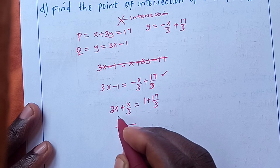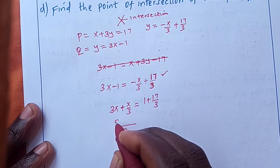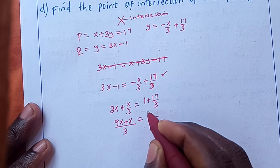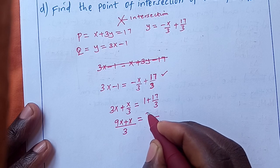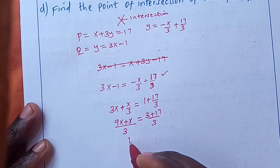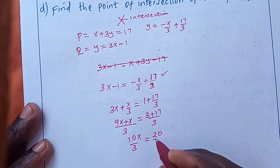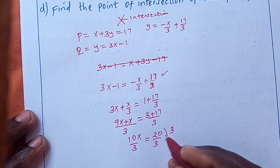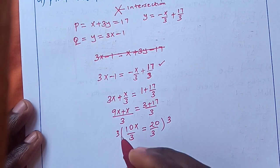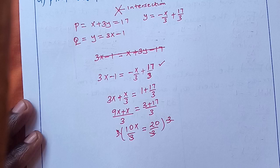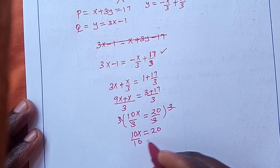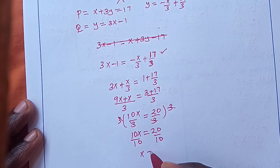The LCM is 3, so it becomes 9x + x = 3 + 17, giving 10x/3 = 20/3. Multiplying both sides by 3, we get 10x = 20. Dividing both sides by 10, x = 2.